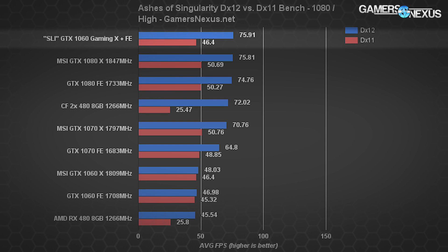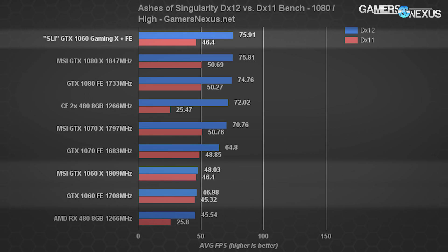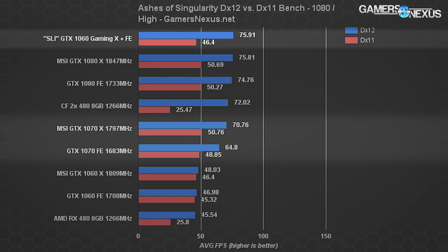With both GTX 1060s we're hitting 75.91 fps in explicit multi-GPU — that's the average fps at 1080p high — as opposed to 46.98 fps average on the Founders Edition GTX 1060 and 48 fps on the MSI variant. From the MSI number, that's a scaling of roughly 1.5x, which isn't bad for a configuration that's never going to be used anywhere. Most interestingly, the multi-GPU setup actually outperforms the single GTX 1070s and even the GTX 1080 Gaming X, also by MSI, pre-overclocked at 1847 MHz.